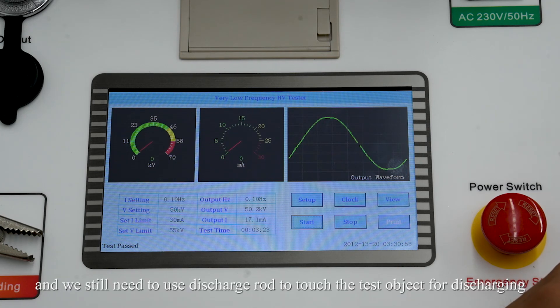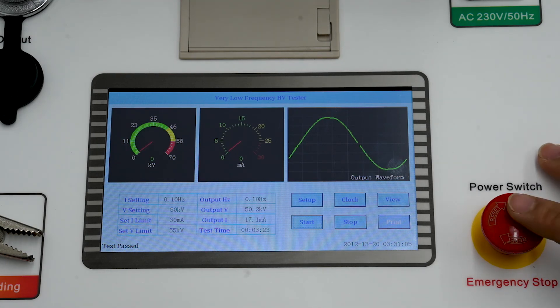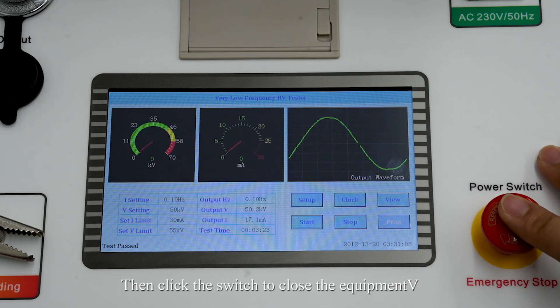And we will need to use discharge rod to touch the test object for discharging. Then click switch to close the equipment.